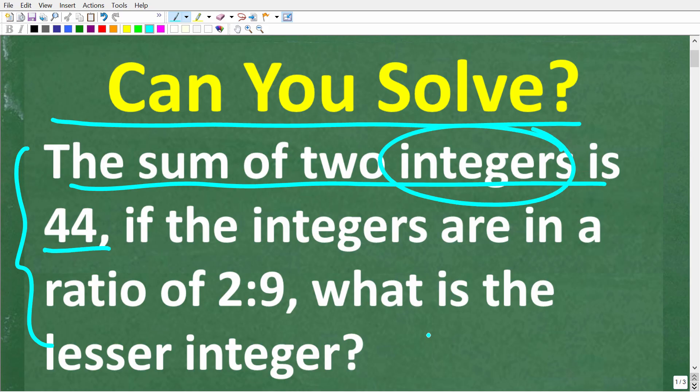So the sum of two integers is 44. Now an integer in mathematics is numbers like 0, 1, 2, and negative 1, negative 2.